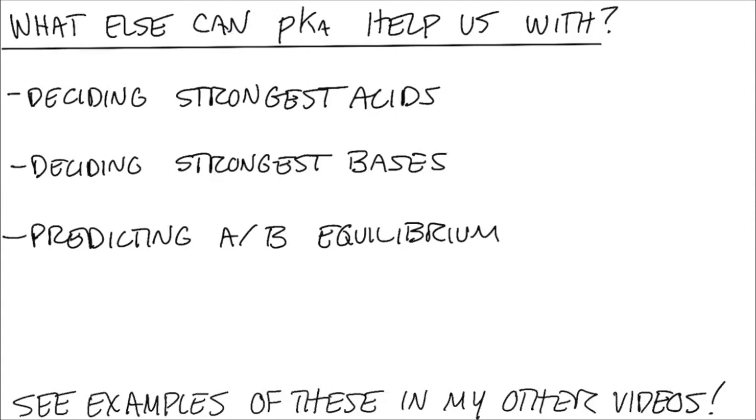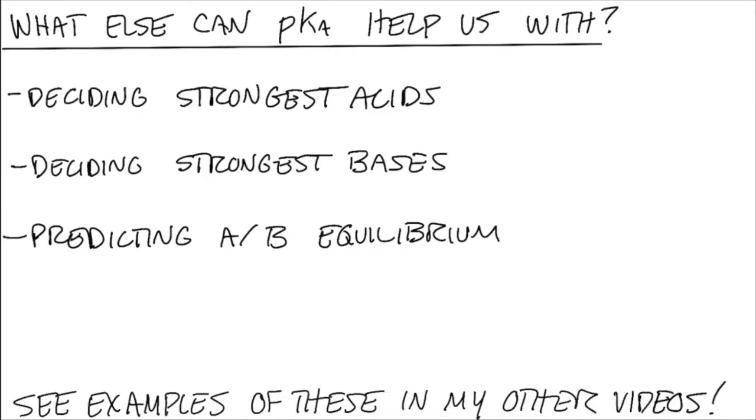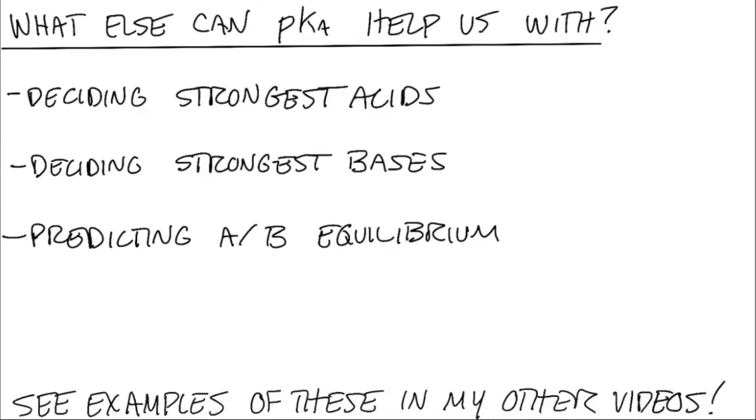So what else can we do with pKa values? We talked a little bit about deciding between acids which one is the strongest. Turns out that pKa values can also help you decide between bases which one is stronger or weaker. And knowing the strength of acids and bases will help you be able to predict which direction an acid-base equilibrium might lie. Acid-base equilibrium might sound like something that we feel like we've covered in Gen Chem, but equilibrium really drives a lot of organic reactions, so we have to be thinking about it here as well. I'll use my pKa values to predict strong acids and bases and how those can play into acid-base equilibrium questions in other videos.